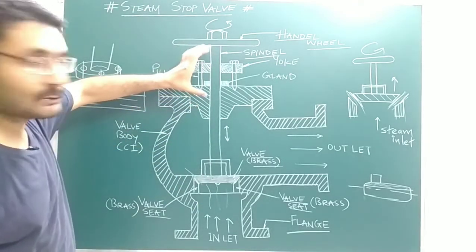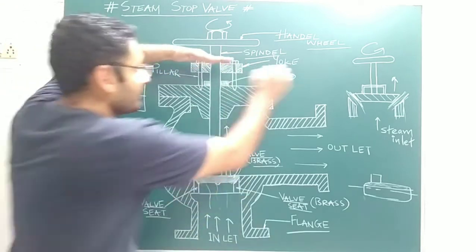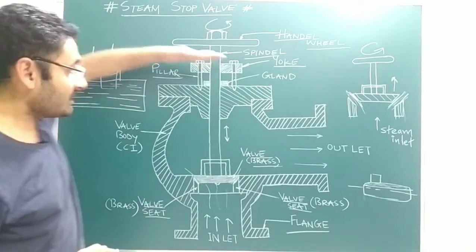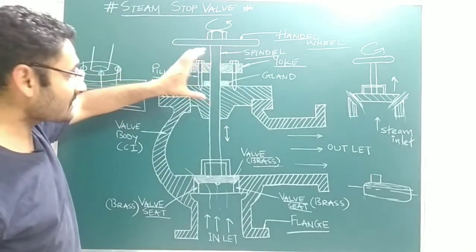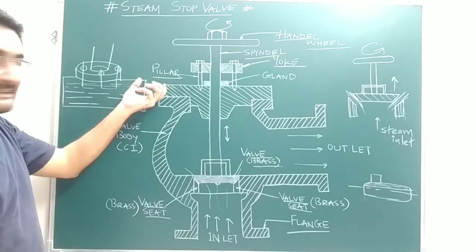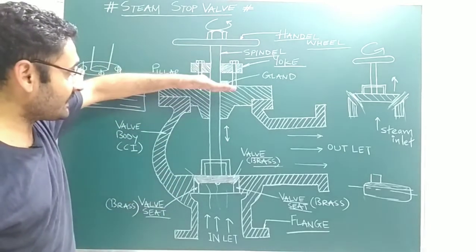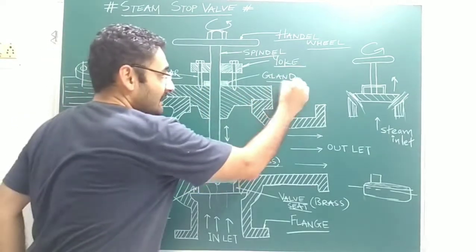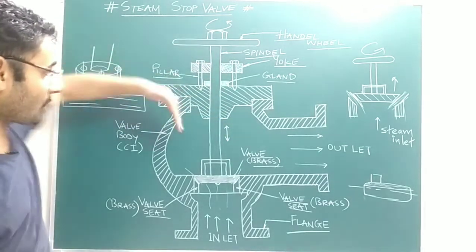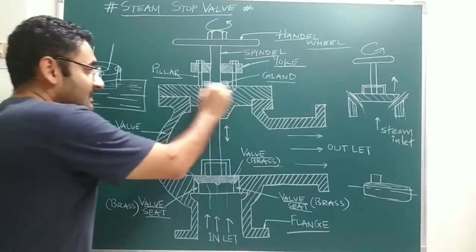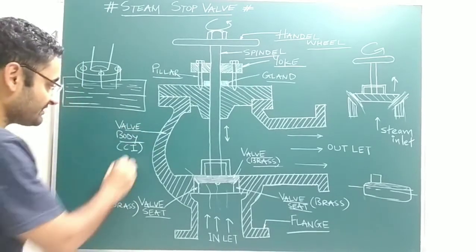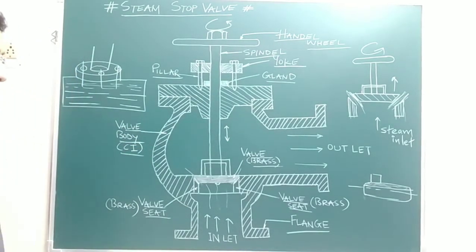Because the spindle is very long, a yoke is used to support some of its length so that misalignment is not present. The pillars — which are a type of bolt or stud — support the yoke. Below the yoke, the dark portion is known as the gland. The gland is used to avoid steam leakage from the steam stop valve. The entire outer structure is the valve body, which is made with cast iron material.